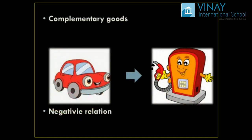Now, if the price of a car increases, obviously the demand for cars will be reduced — because there is an inverse relation between price and quantity demanded. And if fewer cars are sold, there is less need for petrol. This introduces the concept of complementary goods — things we use together to get satisfaction. Examples are car and petrol, and pen and ink; you cannot use a car without petrol or a pen without ink.